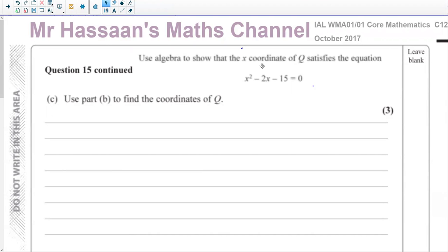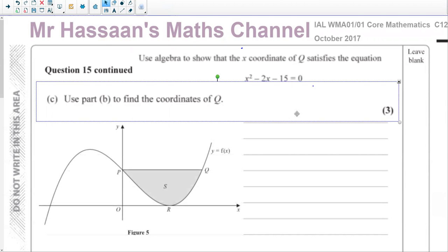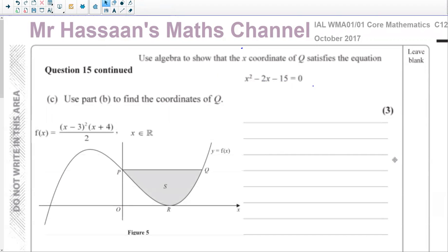Well, we need to know what part B said, and basically this was the situation that we had in the last question. So we were given this equation, and we were given a sketch of the curve. We were told that this line PQ is parallel to the x-axis and meets the curve at P and Q. And we were asked to find the coordinates of P. And we found that the coordinates of P was 0, 18.